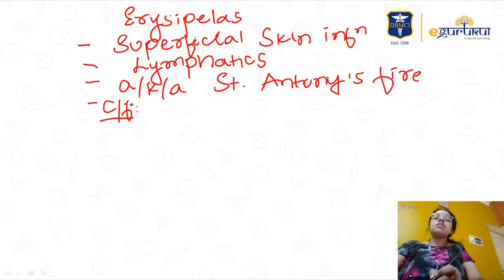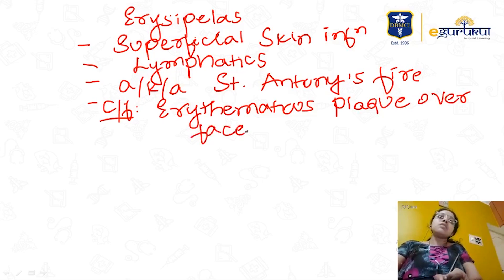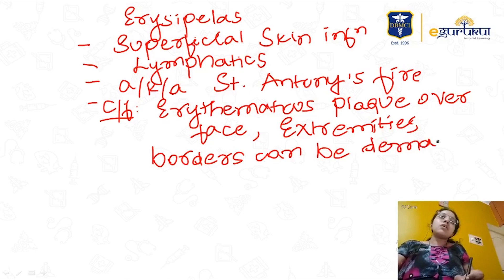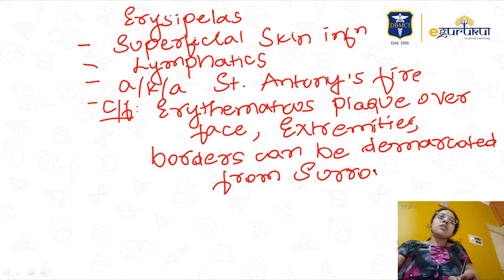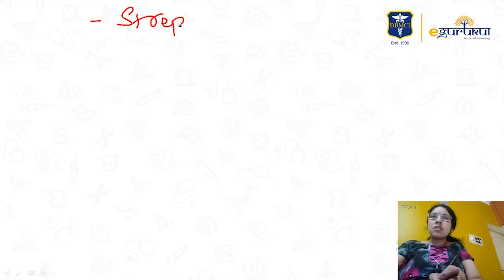Clinical features of erysipelas: erythematous plaque over face and extremities, with borders that can be demarcated from the surrounding skin. This is important because it has to be differentiated from cellulitis, which presents with a similar clinical picture. Erysipelas is caused by Streptococcus pyogenes or Streptococcus species.